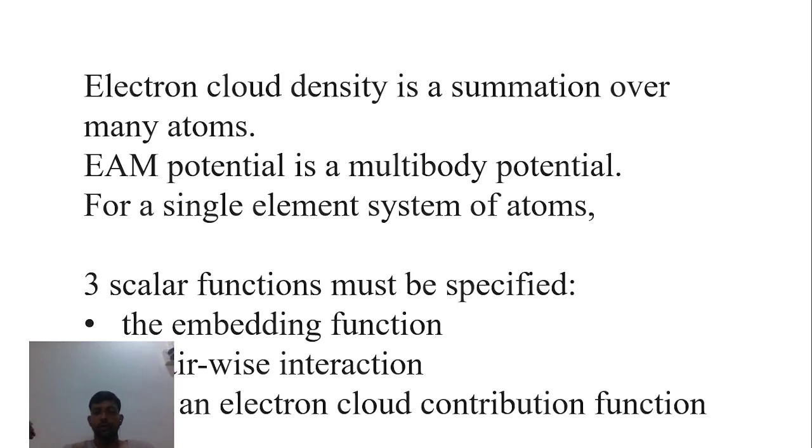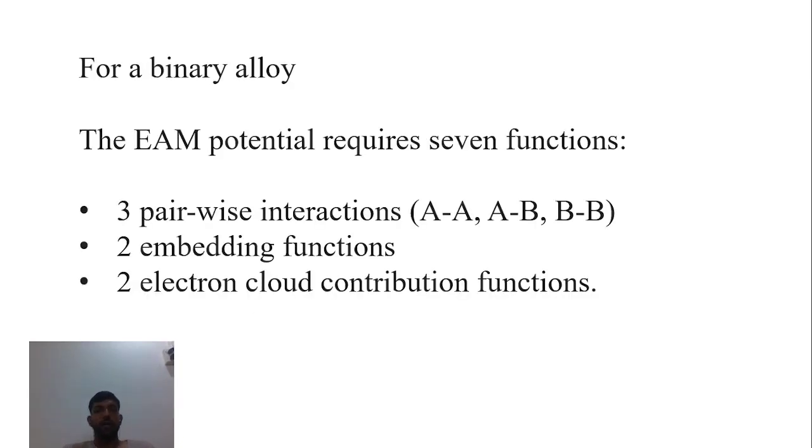As I already told you: embedding function, pairwise interaction, and electron cloud contribution. For a binary alloy, we require three types of scalar functions, but the total count is seven. How? Three pairwise interactions (A-A, A-B, B-B), two embedding functions because we are considering two different types of atoms.